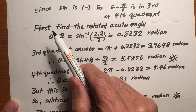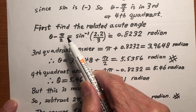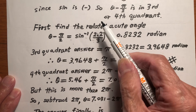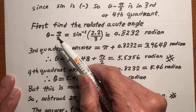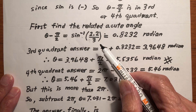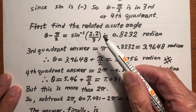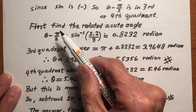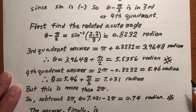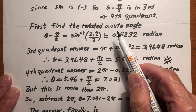Note that the first step is not to find theta — it's to find theta minus pi over two, which is the bracket angle. This bracket angle equals arc sine of 2.2 over 3, without the negative sign. You have to use a calculator set to radian mode. The answer is this radian value — that is the related acute angle.